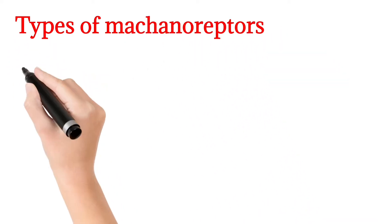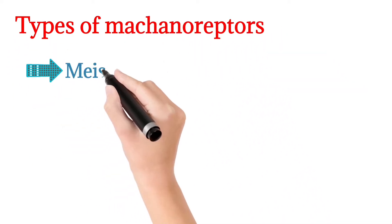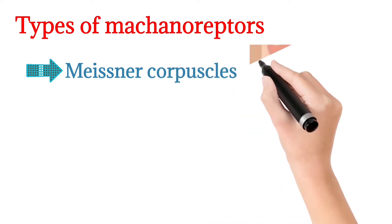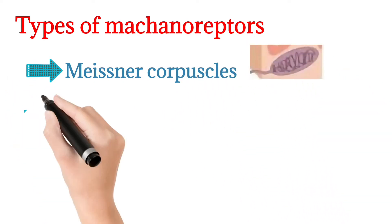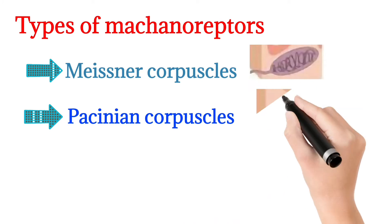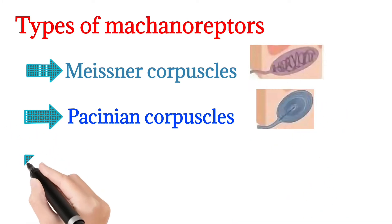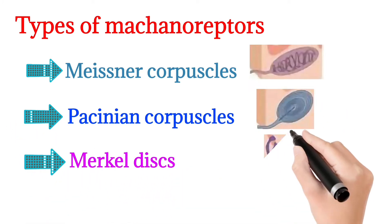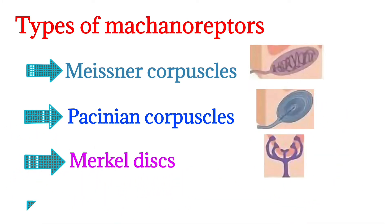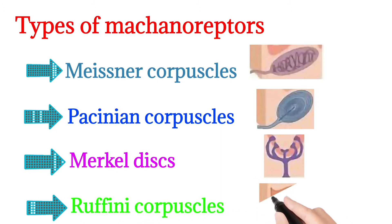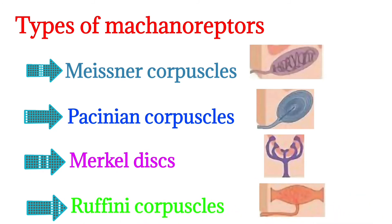Mechanoreceptors are of four types. The first type is Meissner corpuscles. The second type is Pacinian corpuscles. The third is Merkel disc. And the fourth is Ruffini corpuscles.